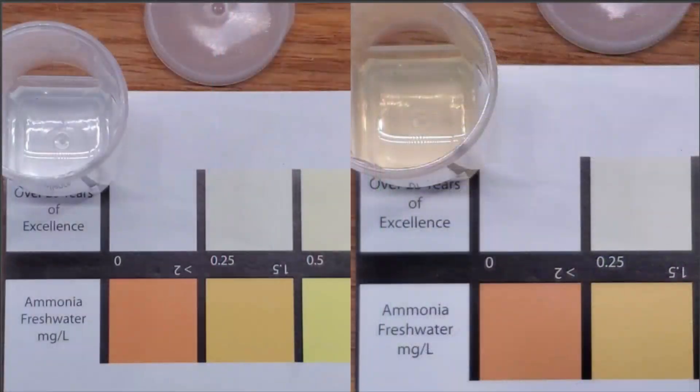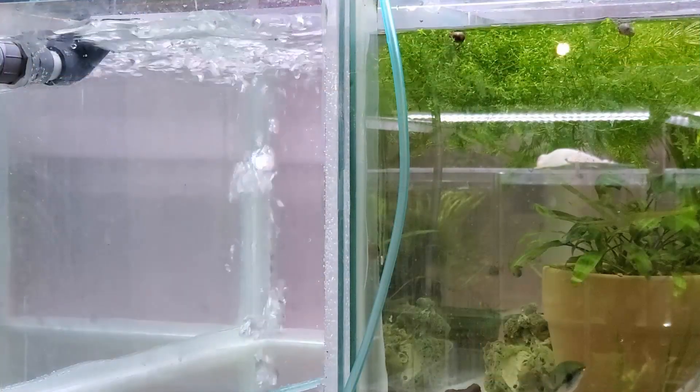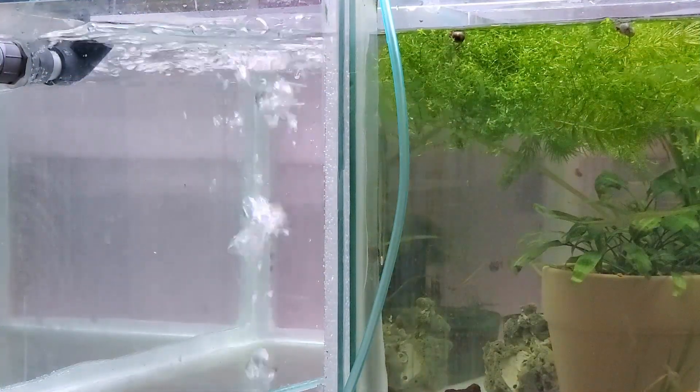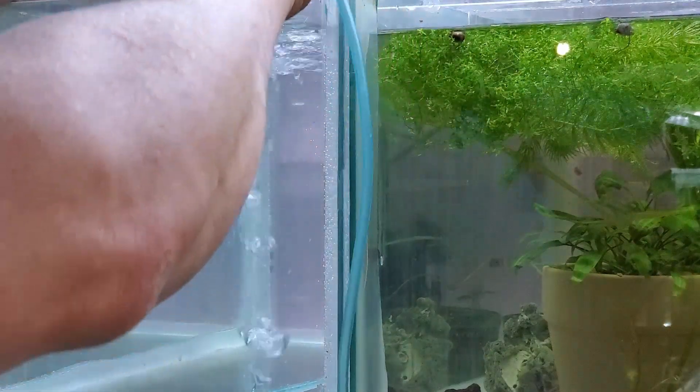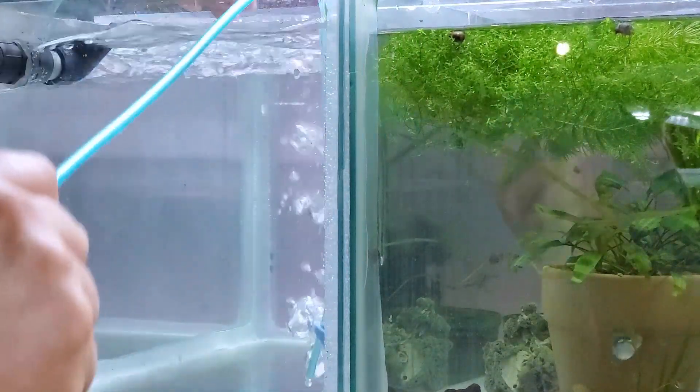I took the reading on the left—you can see it's nice and clear, there's nothing in there. Then I added the chloramine, let that stir around for a few moments, and got the reading on the right. This is actually the start of the next problem I had with this experiment.